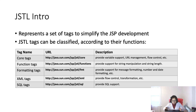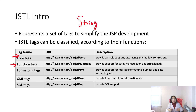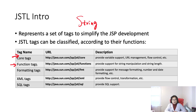JSTL has five tag categories according to functionality. The core tag — which you will definitely use a lot — covers loops and condition checks. The function tag supports string manipulation and string length, very similar to Java's String class methods like indexOf, substring, and split. You can use function tags to access these inside JSP.